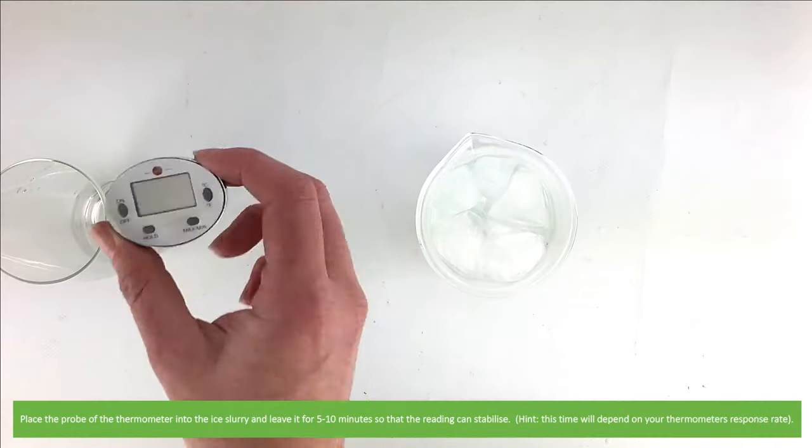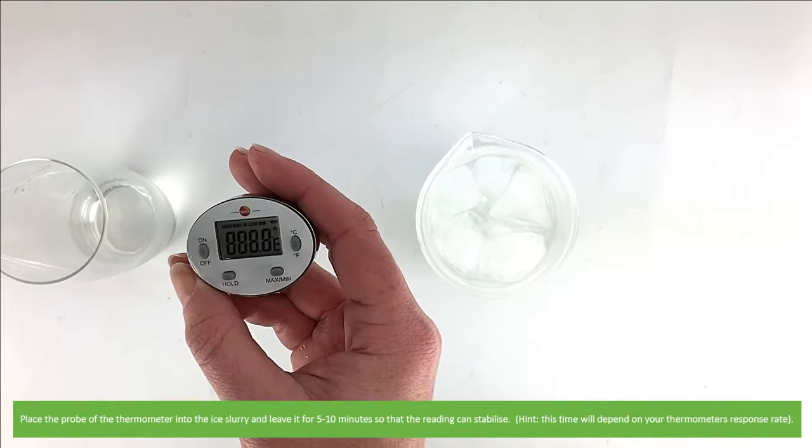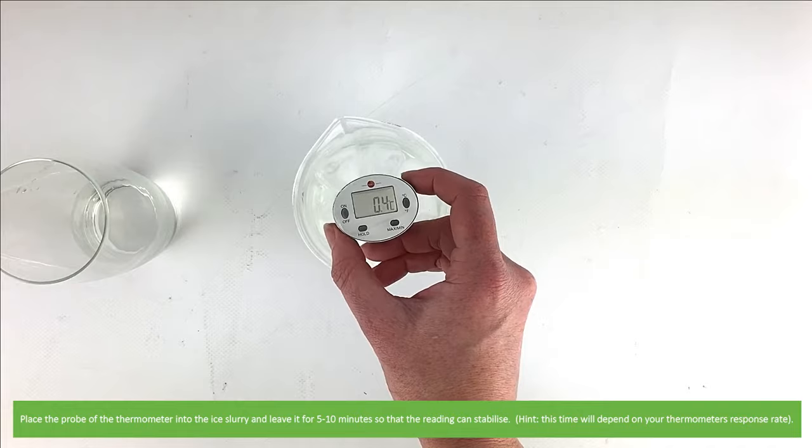Then place the probe of your thermometer into the ice slurry and leave it for five to ten minutes so that the reading can stabilize.